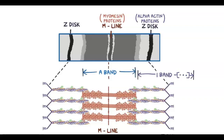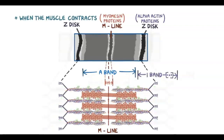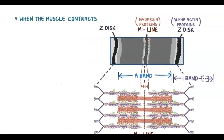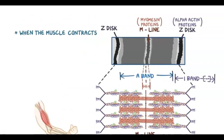Most of the A-band has overlap between the thick and thin filaments, but there's an area toward the center called the H-band, where there are only thick filaments, so it appears slightly lighter. When the muscle contracts, the thick filaments pull the thin filaments above and below it towards the M-line. The Z-discs attached to the thin filament also get pulled towards the M-line, and the whole sarcomere gets shorter.